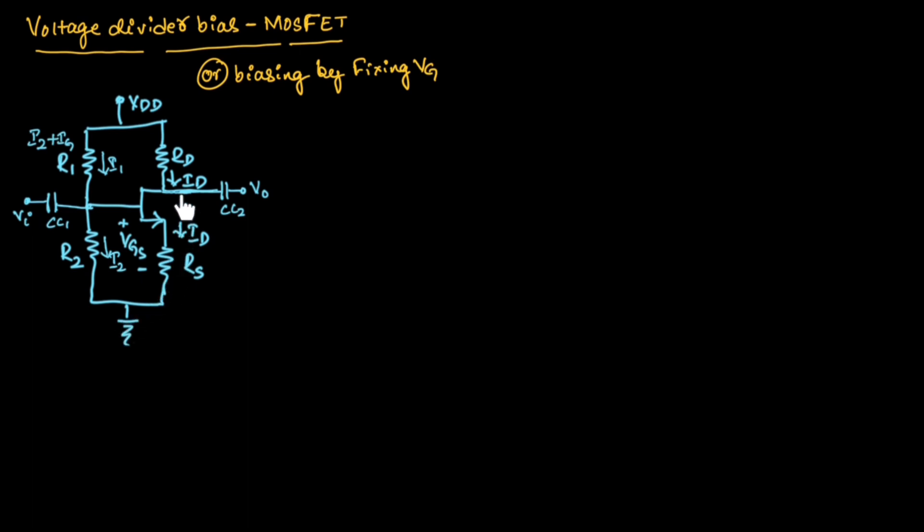This is the circuit for voltage divider biasing of MOSFET. Here, Rd is the resistance across drain or output resistance, Rs is the source biasing resistance, R1 and R2 are voltage divider bias resistors, CC1 and CC2 are coupling capacitors, Id is the drain current, Vgs is gate to source voltage, Vdd is the power supply, Vds is the drain to source voltage or output voltage.